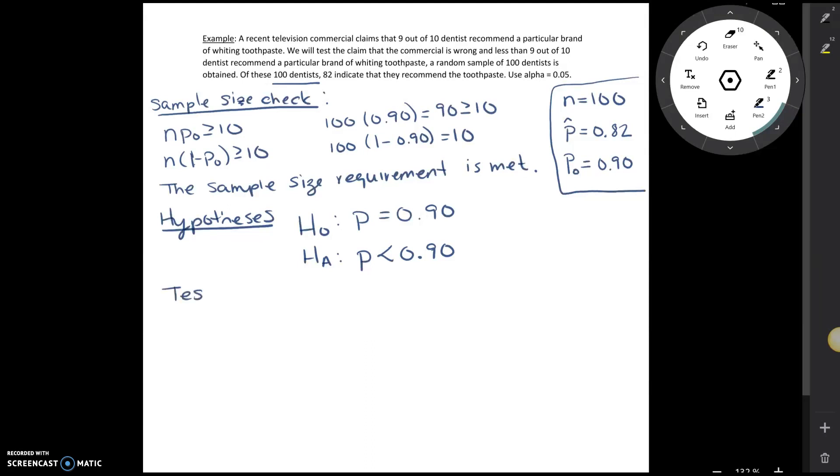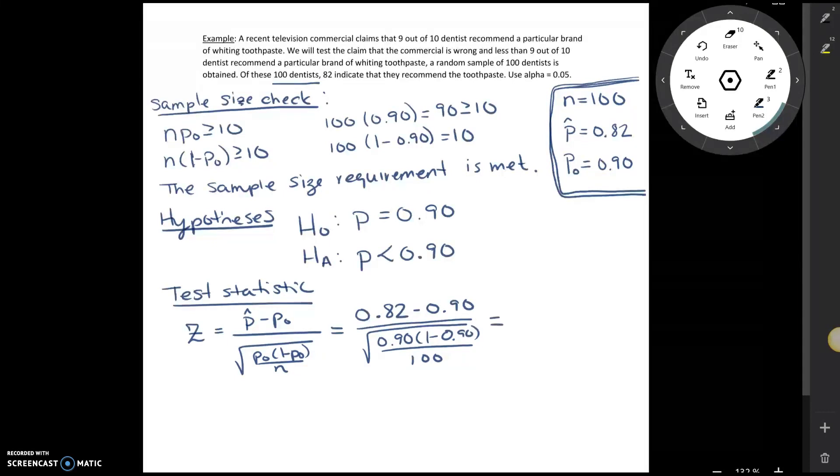Now next, we're going to calculate our test statistic. When working with a hypothesis test for a proportion, our test statistic is denoted by the letter Z. And the formula we're going to have is P hat minus P0 divided by the square root of P0, 1 minus P0, divided by n. And so this is why it's handy if we go ahead and identify these three pieces up here, because now we can just fill in our formula. So our P hat is 0.82 minus the P0 of 0.90. And then in the denominator, we're going to have the square root of 0.90 times 1 minus 0.90, divided by 100.